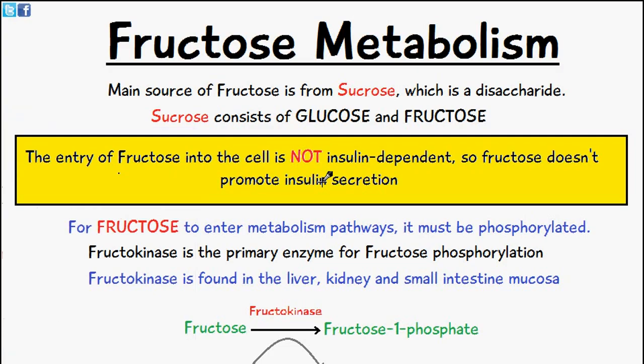Welcome to 5 Minute School. Today's video will be discussing fructose metabolism. A main source of fructose is from sucrose, which is a disaccharide. Sucrose itself consists of glucose and fructose.